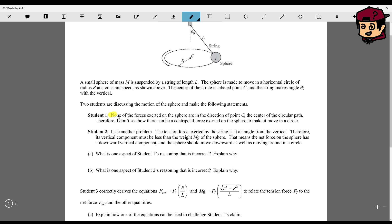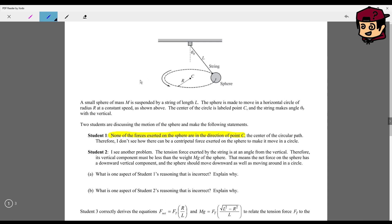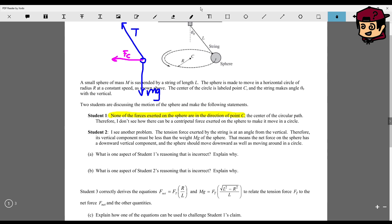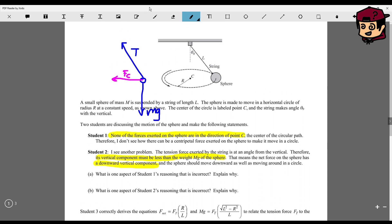For student 1, they're wrong when they say none of the forces exerted on the sphere in the direction of point C. Because if we look at this real quick, we got our sphere, tension, gravity, and the resultant of these two forces is this centripetal force. The vertical component must be less than the weight mg of the sphere. This part is wrong. And this part is wrong about the downward vertical component. Well, why is that?